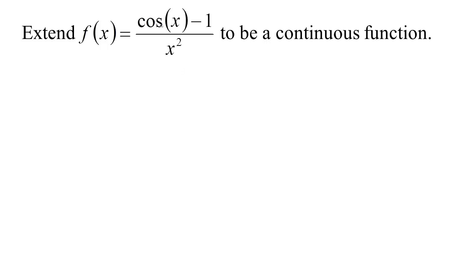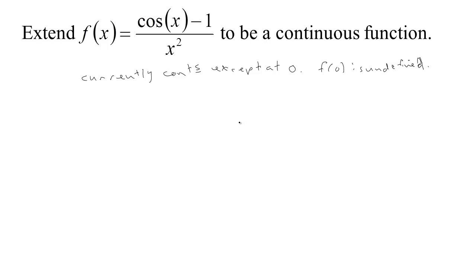This function: cosine is continuous, a constant is continuous, so the numerator is the difference of continuous functions — that has to be continuous. x squared is a polynomial so it's continuous, so the quotient is continuous everywhere except zero. Currently it's continuous except at zero because f at zero is undefined. And if the limit exists at zero then we could just define f at zero to be the value of that limit and it would then be continuous. This limit has the indeterminate form zero over zero because as x tends to zero, cosine gets closer and closer to one, and one minus one gets closer and closer to zero, and x squared also gets closer and closer to zero.